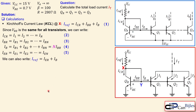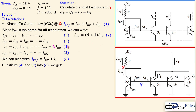We can also write that IC plus IB of the reference transistor together make IE, the emitter current — equation number six. The emitter current of QR is also beta plus one times the base current — equation number seven. Now taking equation number four, where IB equals N times IBR, and substituting it into equation one along with equation seven, we can combine these into a single expression involving only IBR.